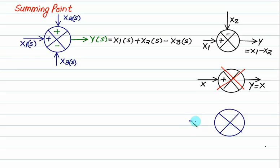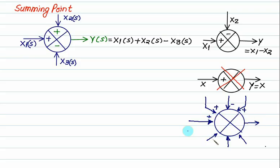If we have a summing point with more than three inputs, we can show like this — there is no problem. We paste signs: plus, minus, minus, plus, plus. A summing point can have any number of inputs: x1, x2, x3, x4, x5, x6, x7. Depending upon their signs, you can write your final output.